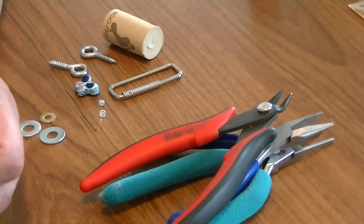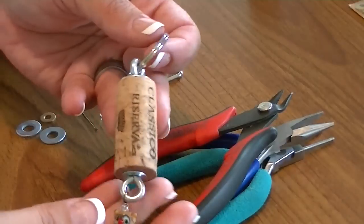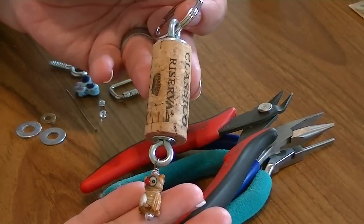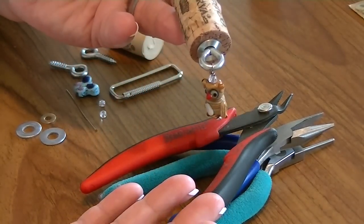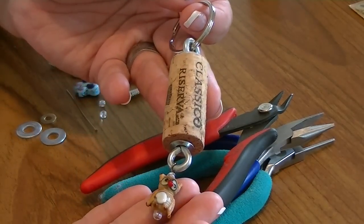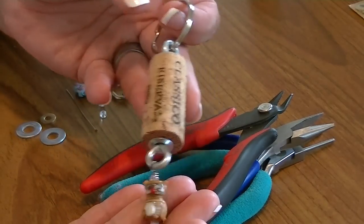Hey there, Trisha with Upcycled Stuff. Today we are doing key chains made out of wine corks with cute little charms dangling off. Let's not waste any time, this is going to be a quick one.